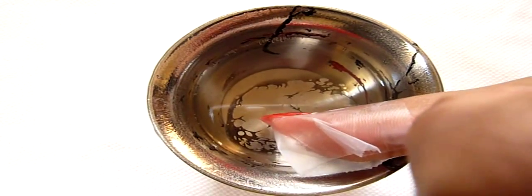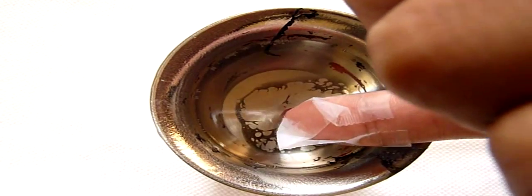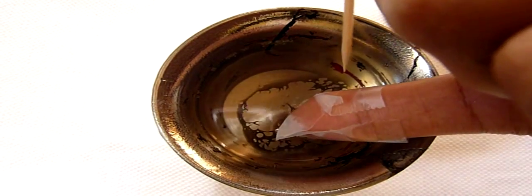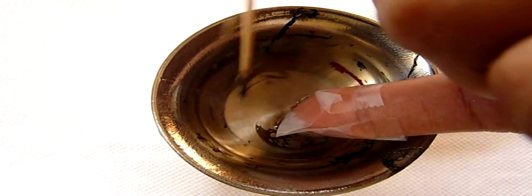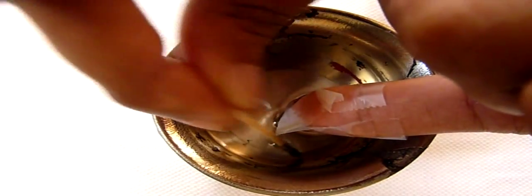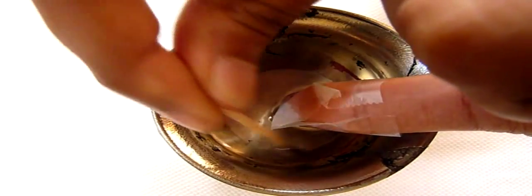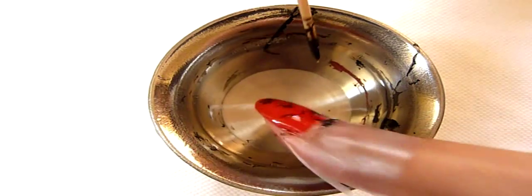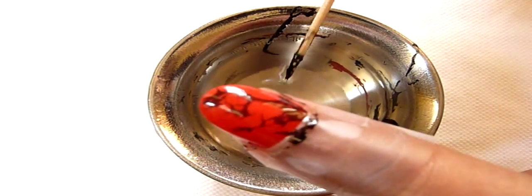Place your finger into the water and push your finger all the way down. Do not remove it. With the help of the toothpick, swirl the surrounding side of the nail. This will remove all the excess nail polish. After all the nail polish has been removed, lift the finger up.